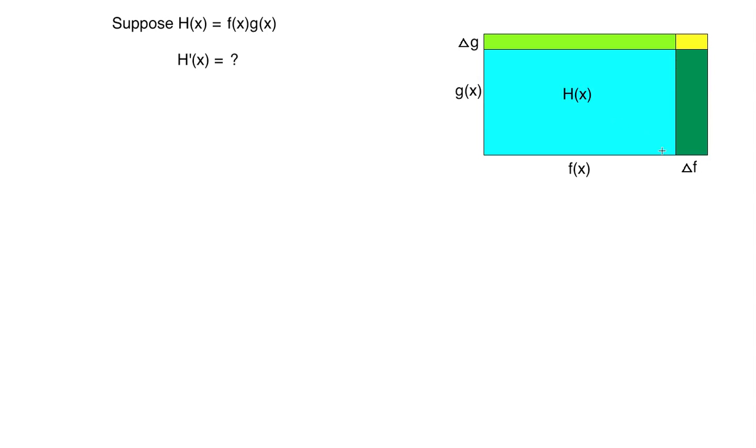So here in this representation, x changes by a little bit, that causes f to change, that causes g to change. So what can we say about the change in h? Well, we can see the change in h is made up of these three rectangles here. Let's write down explicitly what the area is for all three of those.